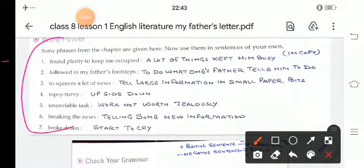Fourth, topsy-turvy means upside down. Fifth, unenviable task means work not worth jealousy. Sixth, breaking the news - telling some new information. And broke down means start to cry.